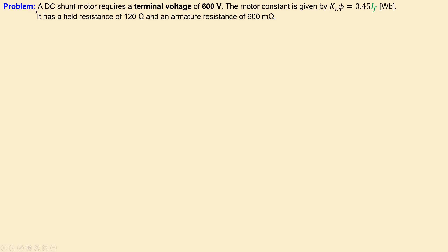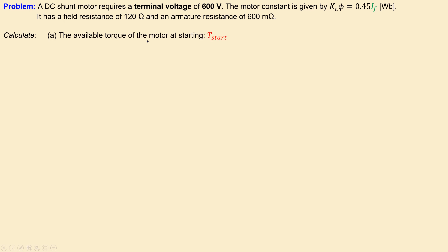We have a DC shunt motor that requires a terminal voltage of 600 volts. The motor constant is given by 0.45 times the field current. The DC shunt motor has a field resistance of 120 ohms and an armature resistance of 600 milliohms. We are required to calculate the available torque at starting, and then repeat that if there is a 20 ohm resistor connected in series with the armature part.